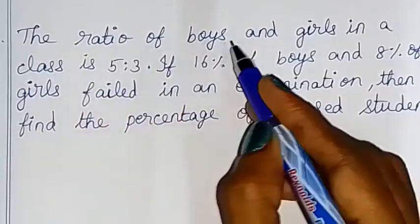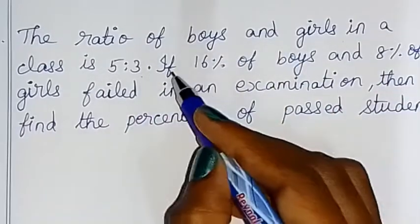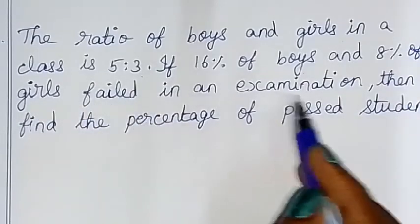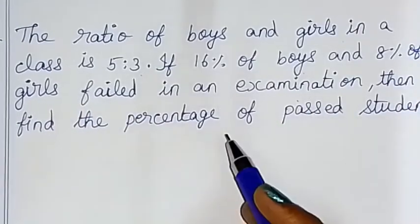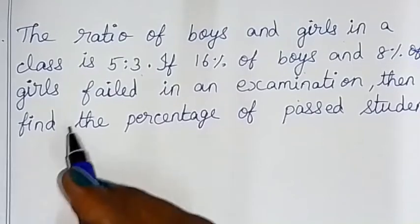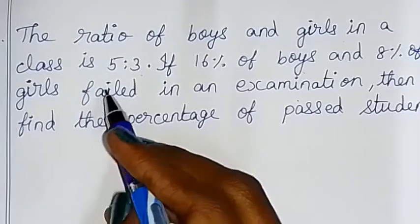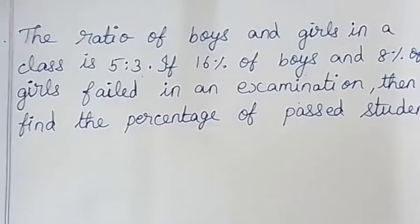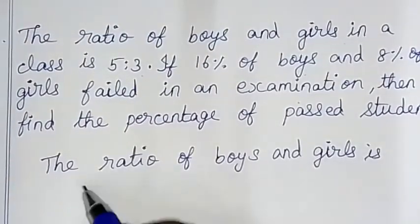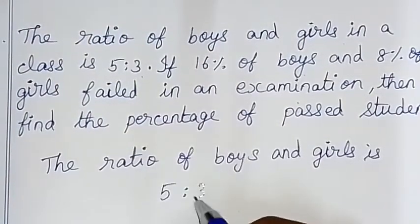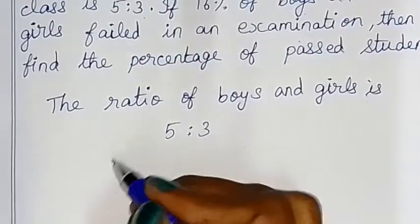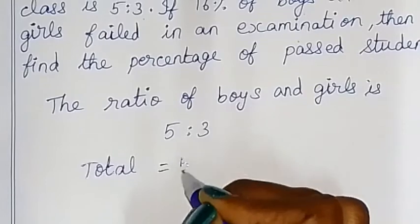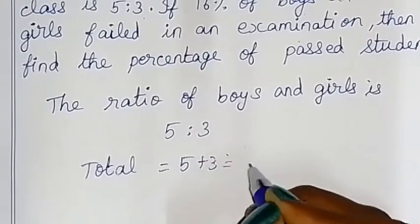Now, the ratio of boys and girls in a class is 5 is to 3. If 16% of boys and 8% of girls failed in an examination, then find the percentage of students who passed. The total parts = 5 plus 3 = 8.